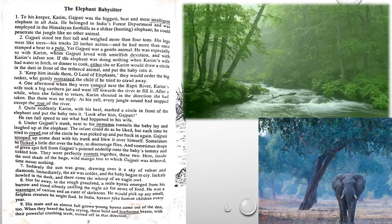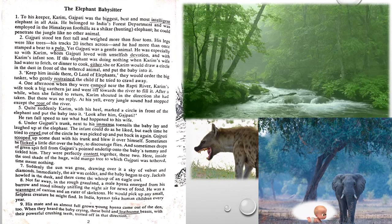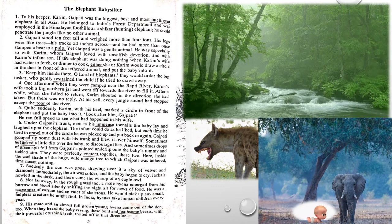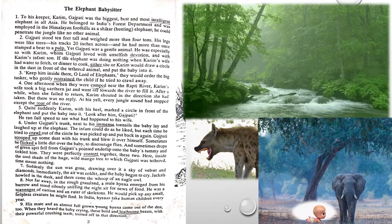The Elephant Babysitter. To his keeper Karim, Gajapati was the biggest, best, and most intelligent elephant in all Asia. Intelligent means brilliant. He belonged to India's forest department and was employed in the Himalayan foothills as a shikar – a hunting elephant. He could penetrate the jungle like no other elephant. Penetrate means to enter into.